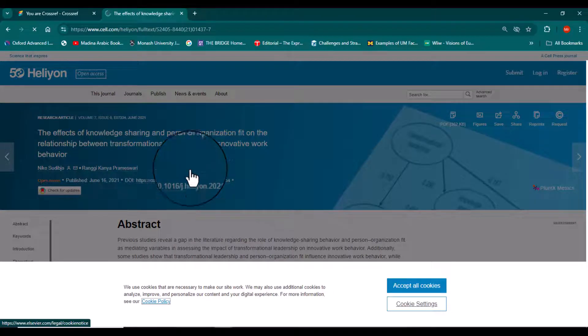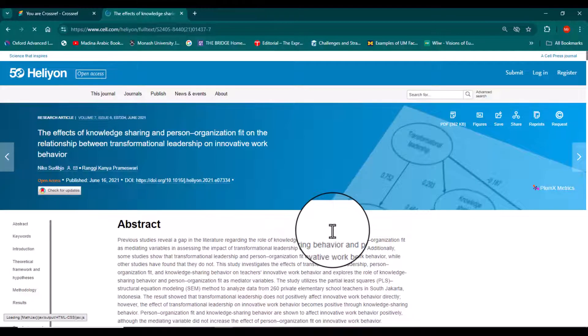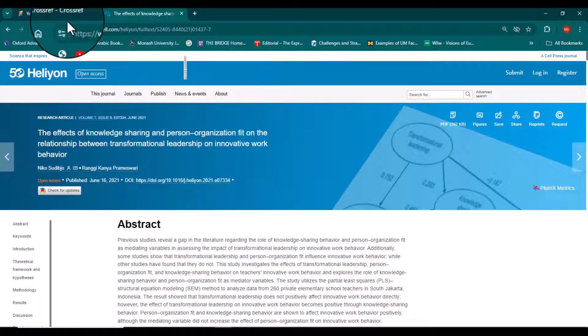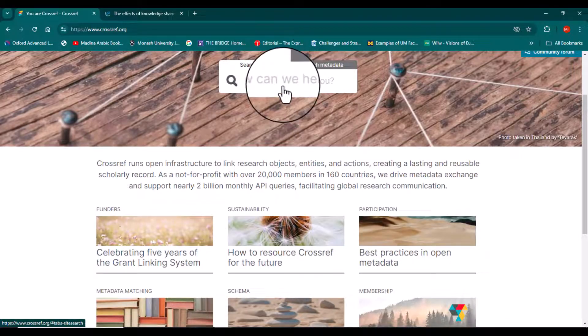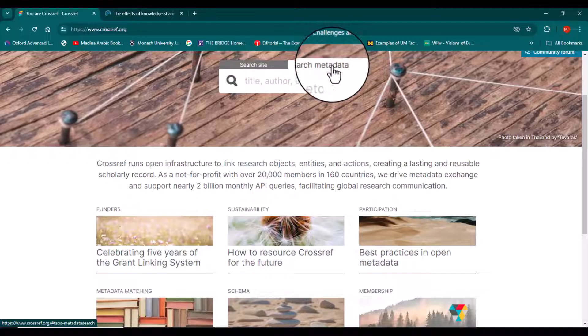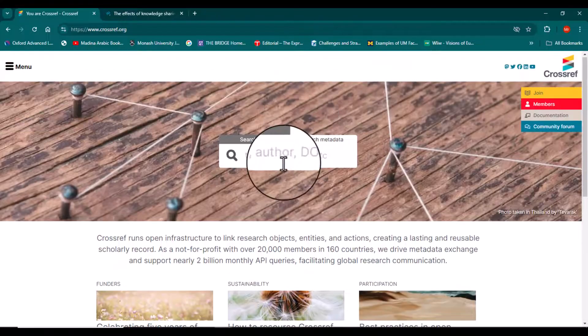The third strategy which we can use to search our DOI number is the website. You can simply open this website crossref.org and here simply click search metadata.